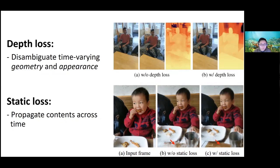We also apply a static loss: regions not visible in the current video frame are assumed static, so content can be propagated across time. For example, if the input views zoom into the boy at a given time, but you want to render from a camera further back, without the static loss the model doesn't know what the background looks like. With the static loss, content is transferred from other frames in 3D. This approach is simpler than many regularization losses, requiring only the depth loss plus reconstruction loss.